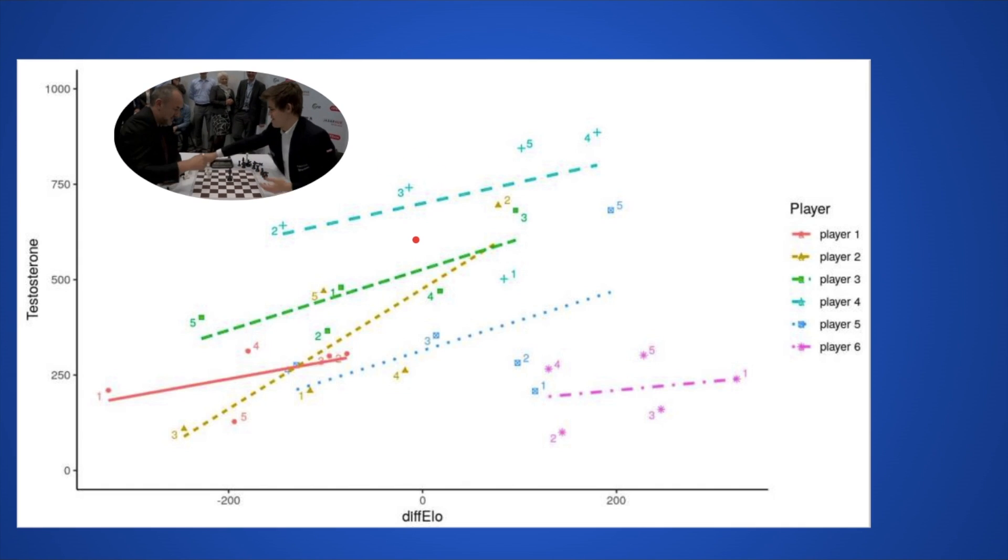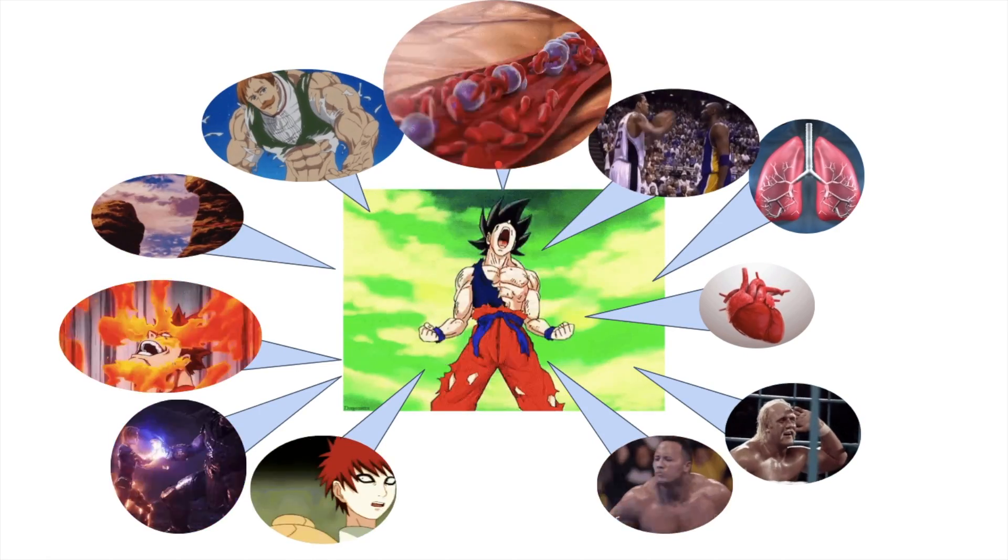And those catecholamines quickly go to your testes and allow you to quickly absorb cholesterol and make testosterone extremely fast. That's why you see this crazy increase in free testosterone.